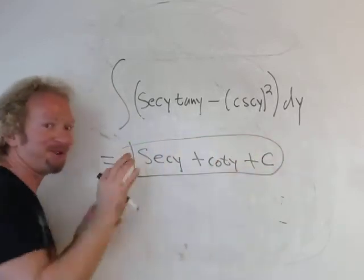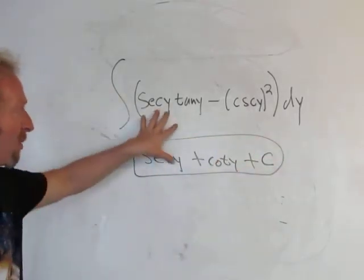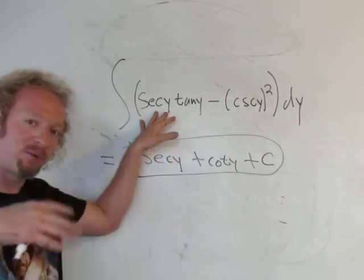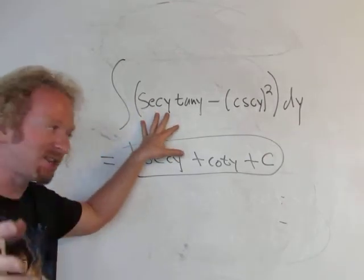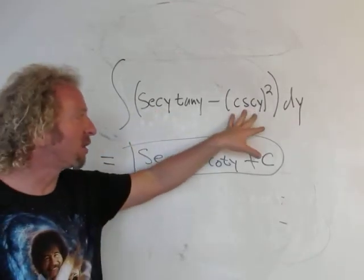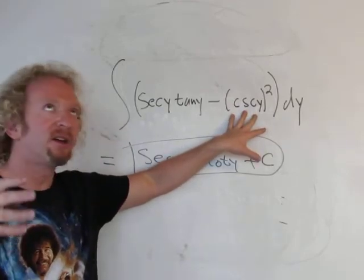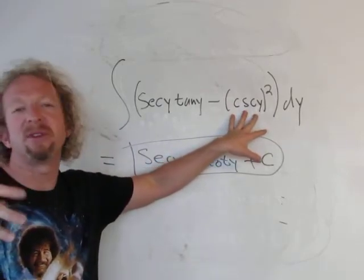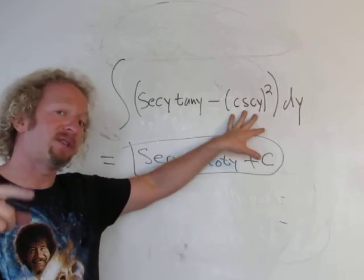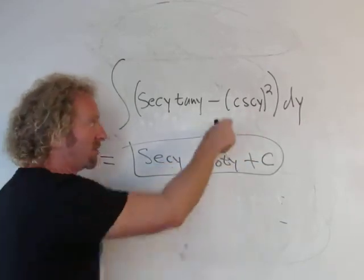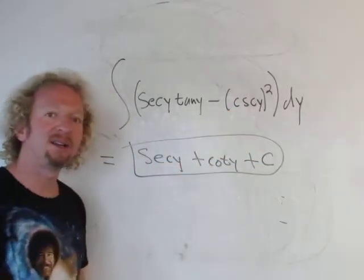It's really easy if you know how to do it. So think backwards. You have secant tangent, you ask yourself what's a function whose derivative is secant tangent? Secant. You have a cosecant squared, so what's a function whose derivative is something with cosecant squared? Well, the derivative of cotangent is negative cosecant squared, so you just put a cotangent and that's it.